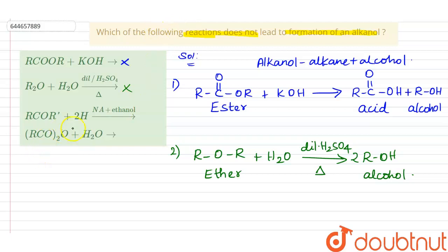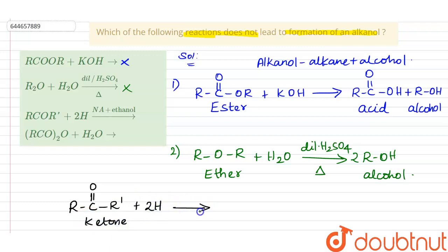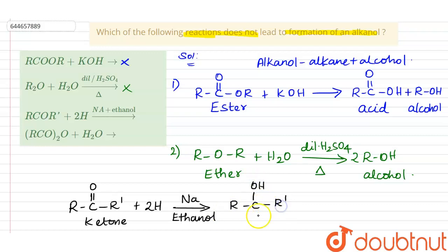The third option is RCOR', which is RC double bond O R' — nothing but a ketone. When this ketone undergoes reduction with sodium in the presence of ethanol, there will be formation of a secondary alcohol, which is also an alkanol. So this reaction also produces alkanol as a product and is not the answer.